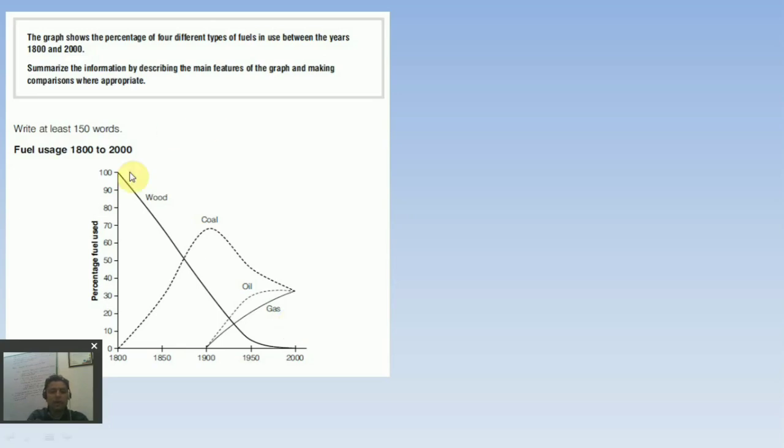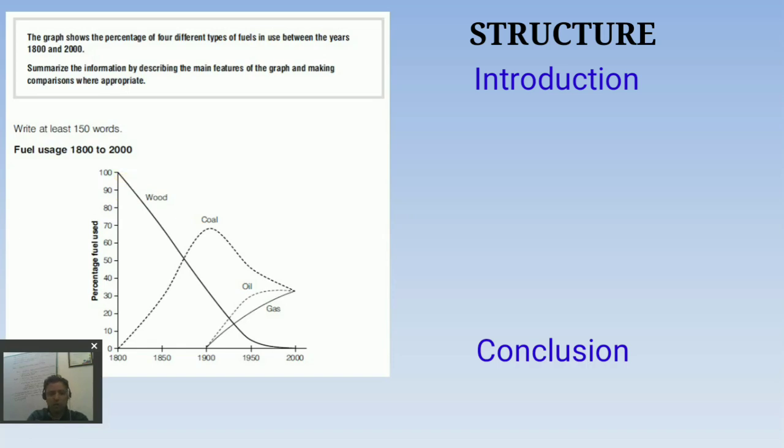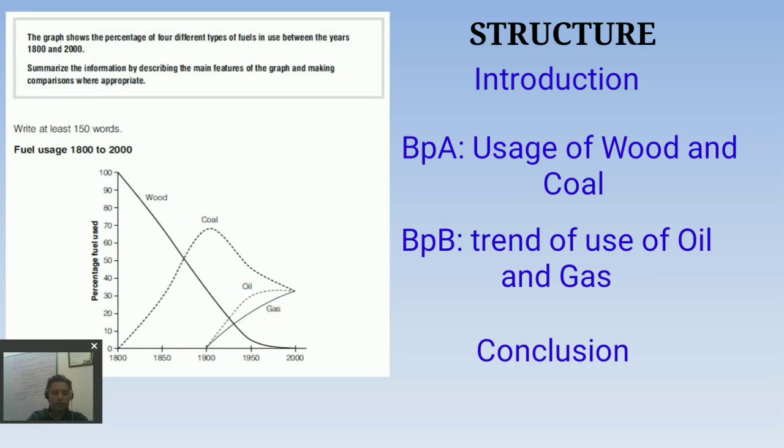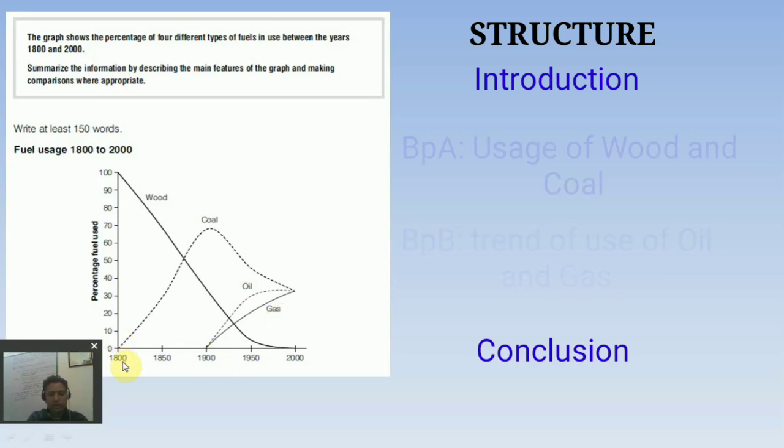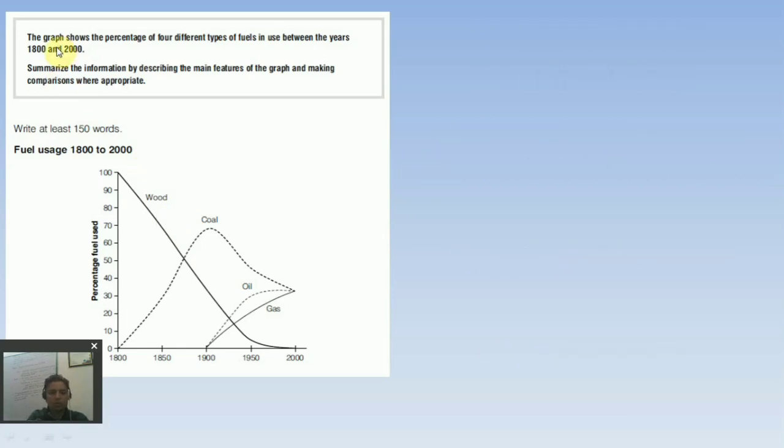The thing is quite simple students for explaining this particular task. We will explain the trend of wood and coal in one body paragraph, and later the trend of oil and gas can be explained in another body paragraph. Or we can explain the first century in body paragraph one, from year 1800 to 1900, and then years 1900 to 2000 can be explained in body paragraph two.